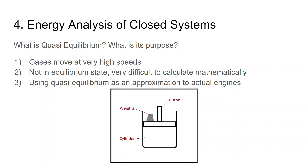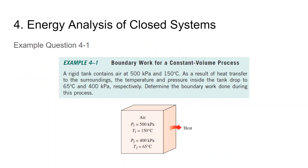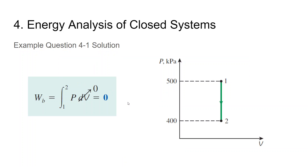Let's look at Example 4-1: boundary work for a constant volume process. A rigid tank contains air at 500 kPa and 150°C. Due to heat transfer to the surroundings, temperature and pressure drop to 65°C and 400 kPa. The key word here is 'rigid tank,' meaning constant volume. Since boundary work is the integral of p dV and dV equals zero, boundary work is zero — the boundary did not move, so no work can be produced.